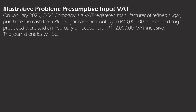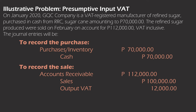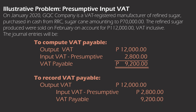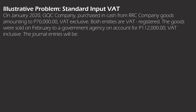Our third illustrative problem is on presumptive input VAT. The company is a VAT-registered manufacturer of refined sugar that purchased in cash raw materials — sugar cane — amounting to 70,000. The refined sugar produced was sold the following month on account for 112,000 VAT inclusive. To record the purchase: debit purchases/inventory 70,000; credit cash 70,000. To record the presumptive input VAT: debit input VAT (presumptive) 2,800 — computed as 4% × 70,000 — and credit other income 2,800. Comparing output VAT of 12,000 and presumptive input VAT of 2,800 gives VAT payable of 9,200. To record VAT payable: debit output VAT 12,000; credit input VAT (presumptive) 2,800 and VAT payable 9,200.